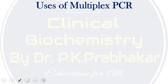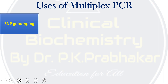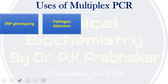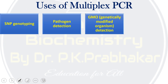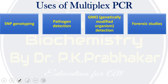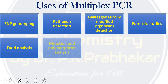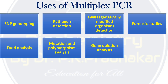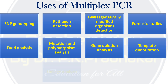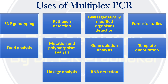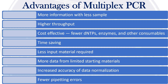Multiplex PCR is used in many areas: SNP genotyping, pathogen detection including coronavirus, foodborne disease detection, genetically modified organism identification, forensic studies and criminal detection, DNA fingerprinting, food analysis, mutation and polymorphism analysis, gene deletion analysis, template quantitation, linkage analysis, and RNA detection.